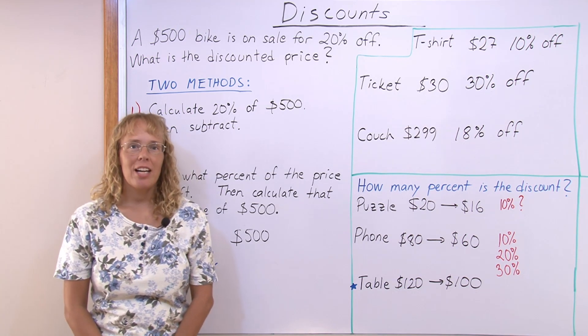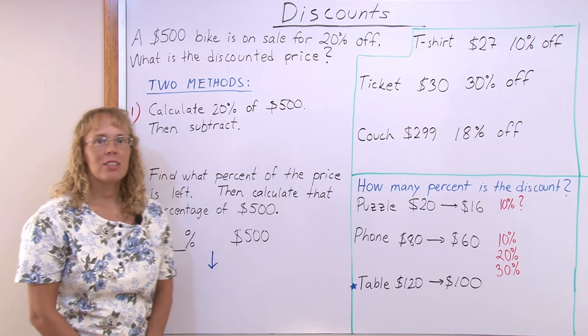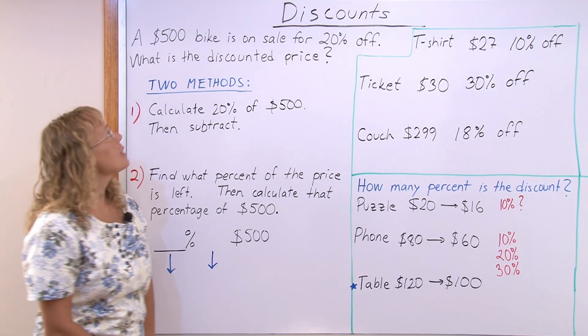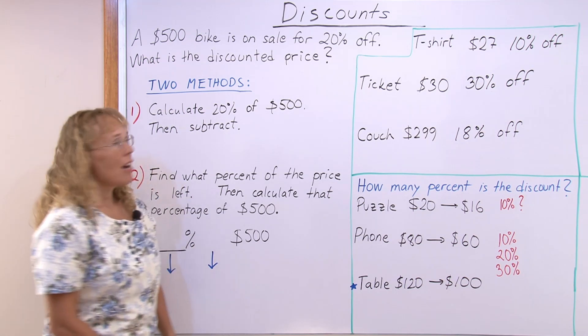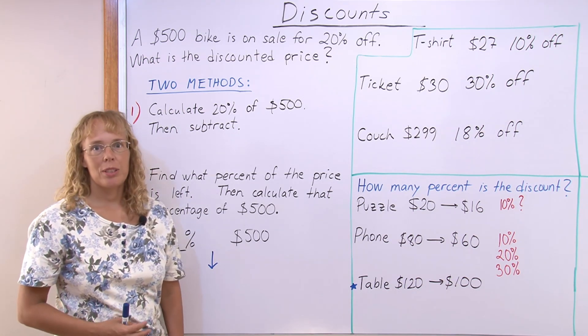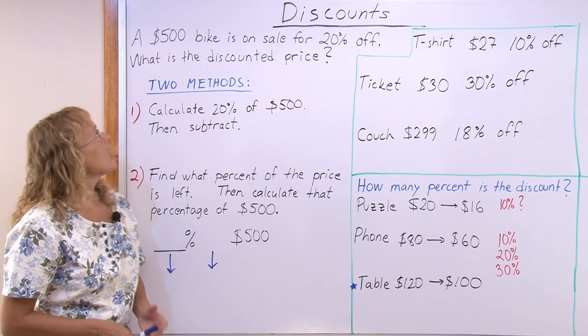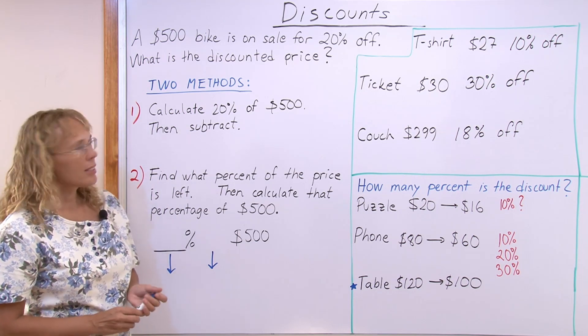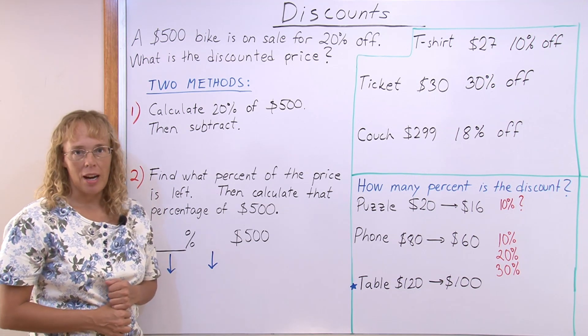My first example is: a $500 bike is on sale for 20% off. What is the discounted price?